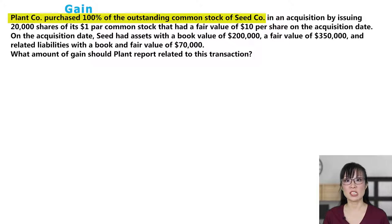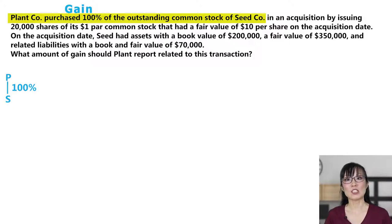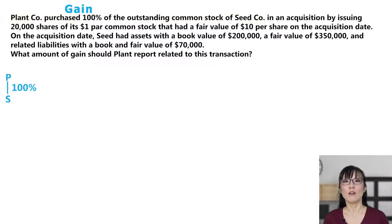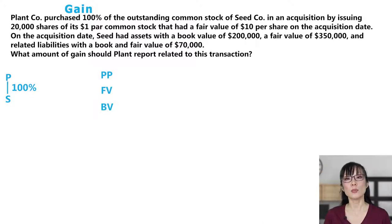Plant purchased 100% of Seed. Start with the picture — write P and S and the ownership percentage so we can see who's who. Then let's set up for our calculations: book value on the bottom, fair value in the middle, and purchase price at the top. Note the percentage: 100%.